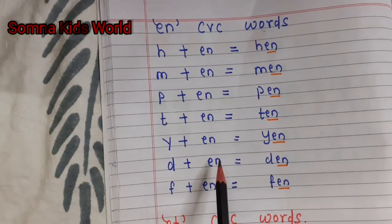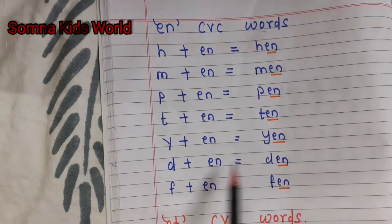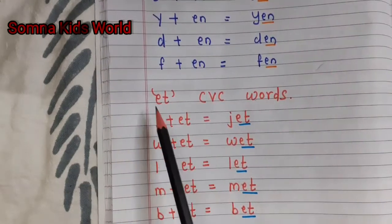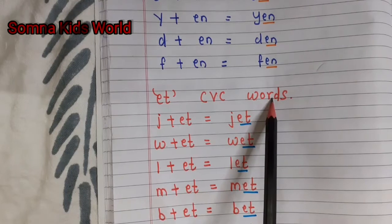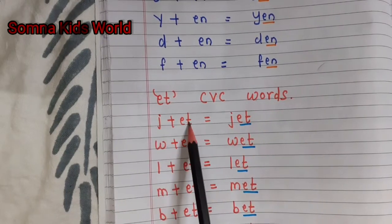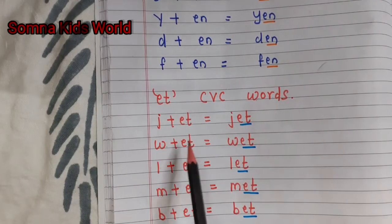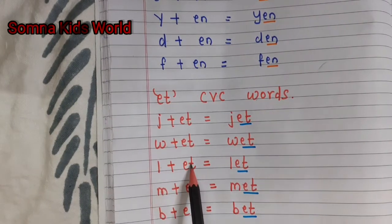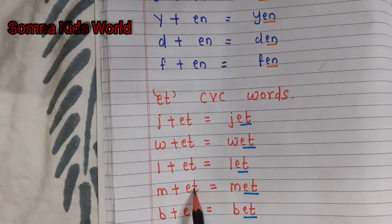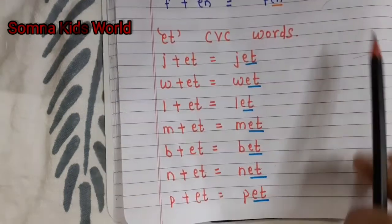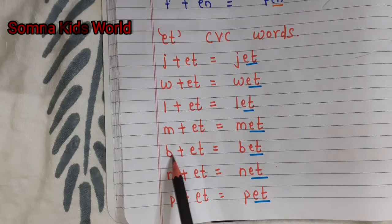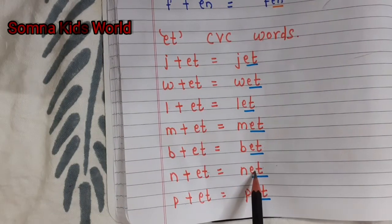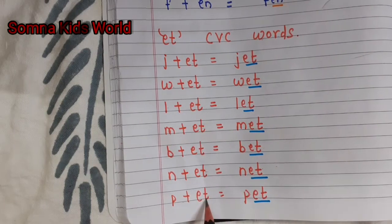Next is the 'et' CVC words: j-et — jet, w-et — wet, l-et — let, m-et — met, n-et — net, p-et — pet.